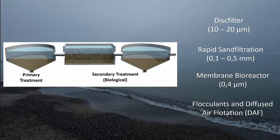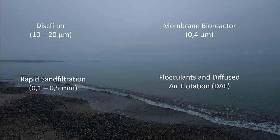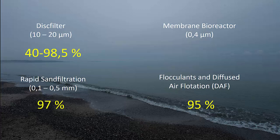What was the result from this research? For the disc filter, they had a removal between 40 to 98.5 percent; diffused air flotation, 95 percent; rapid sand filtration, 97 percent; and finally membrane bioreactor, 99.9 percent removal of the microplastic. Keep in mind that the water sent through the disc filter, membrane reactor, rapid sand filtration, and the DAF unit was water that had already been treated in a conventional activated sludge plant.